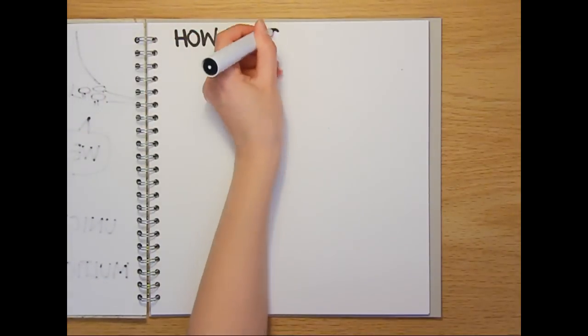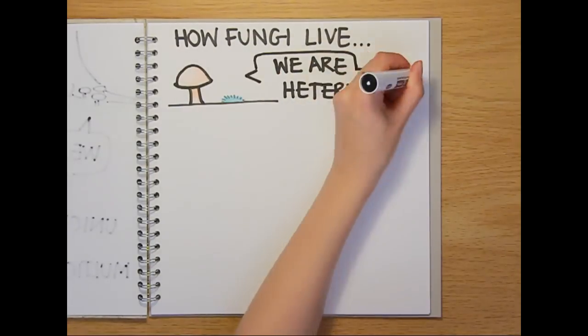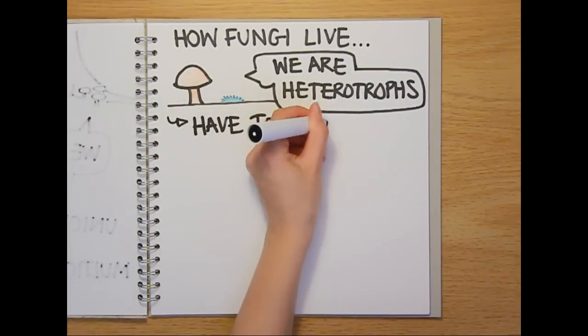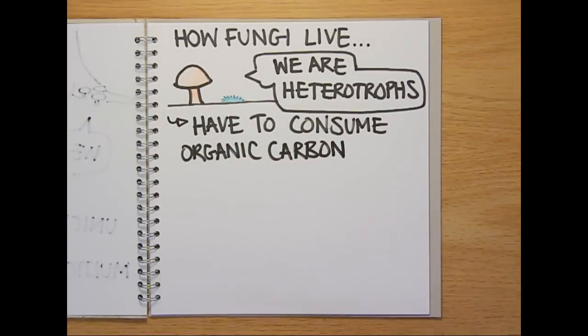First of all, how do they live? Fungi are similar to animals in the sense that they are heterotrophs. This means that, unlike plants, they can't make their own organic carbon-based compounds. Instead, like us, they have to consume them from their environment.